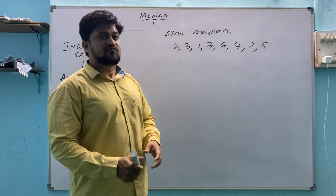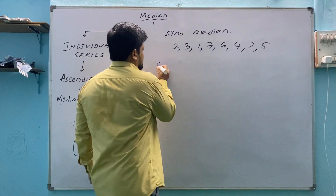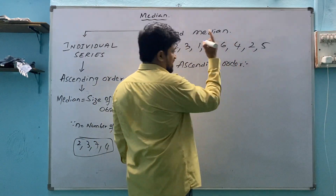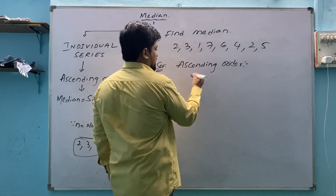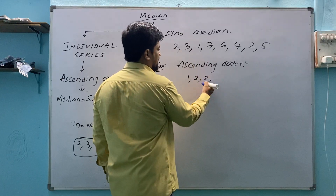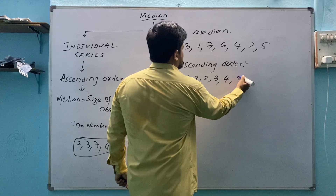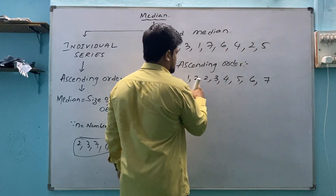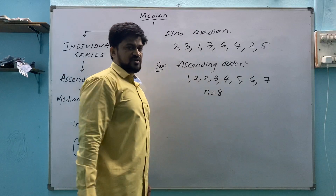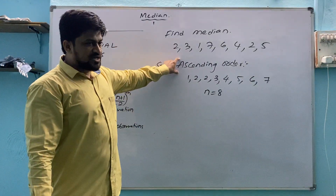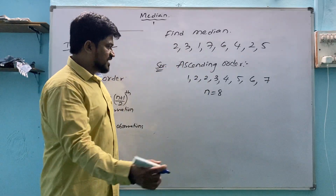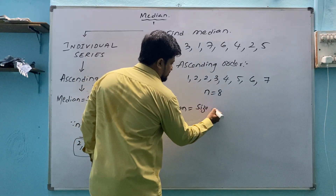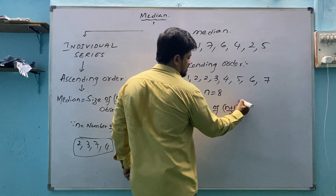To find median, we do not use sigma xi by n — that gives mean. For median, first write the values in ascending order: 1, 2, 3, 4, 5, 6, 7. Count the number of values — there are 8 numbers, so n equals 8. Then apply: median equals size of (n+1)/2 observation, which gives size of (8+1)/2 = 4.5th observation.